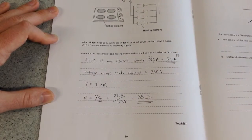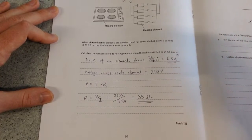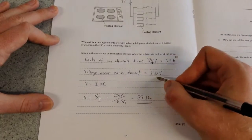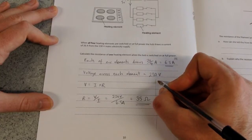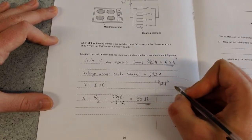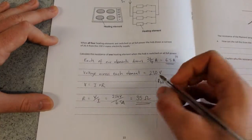Again, as with most questions on the electricity topic, there is another way you could do this. You could have calculated the total resistance. So the total resistance is equal to the voltage across the whole lot, 230,